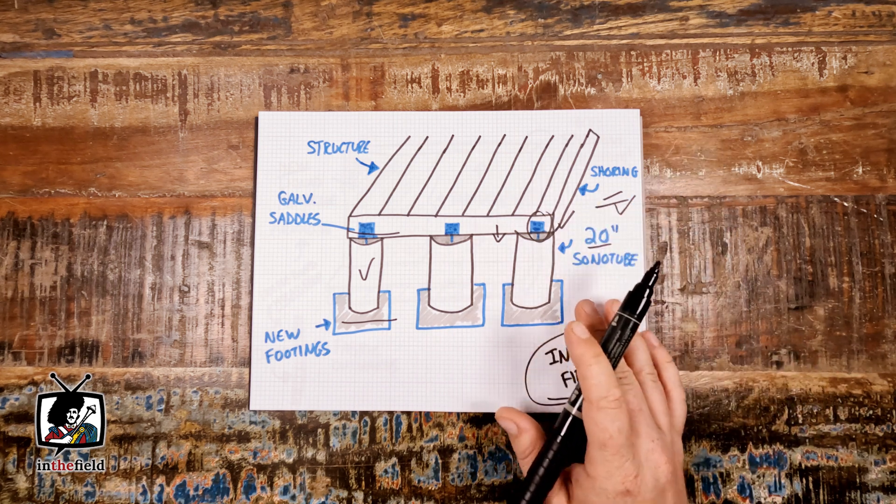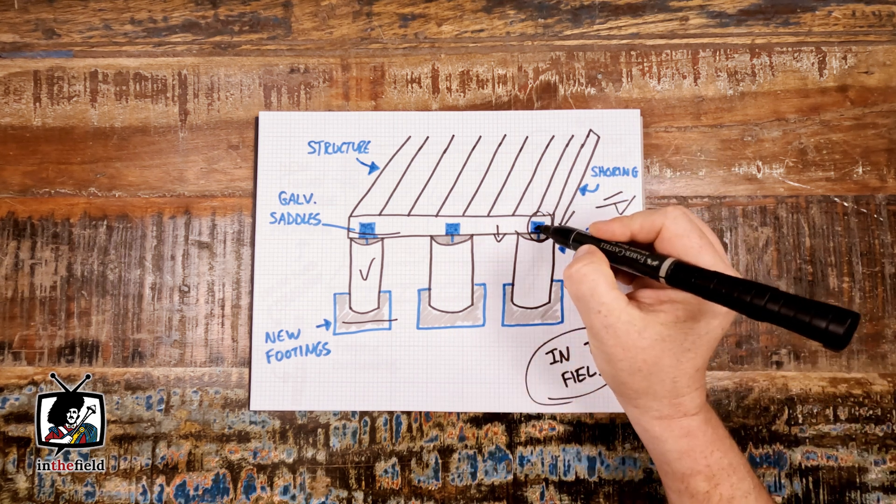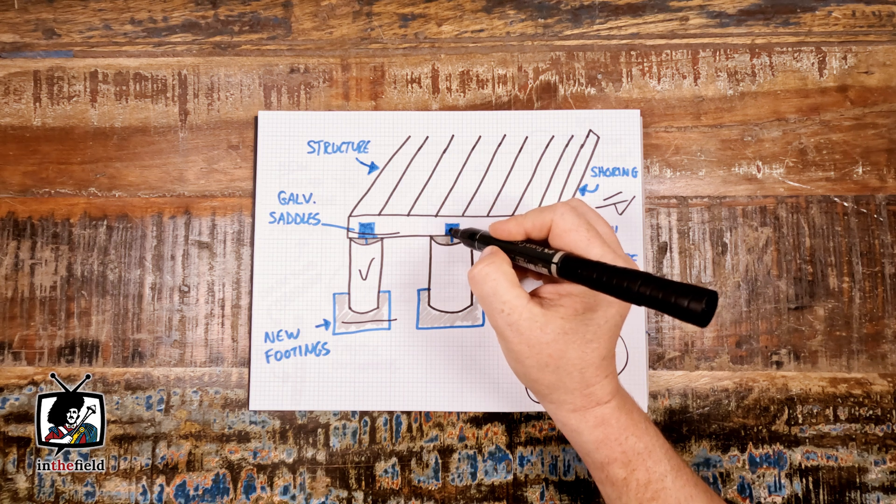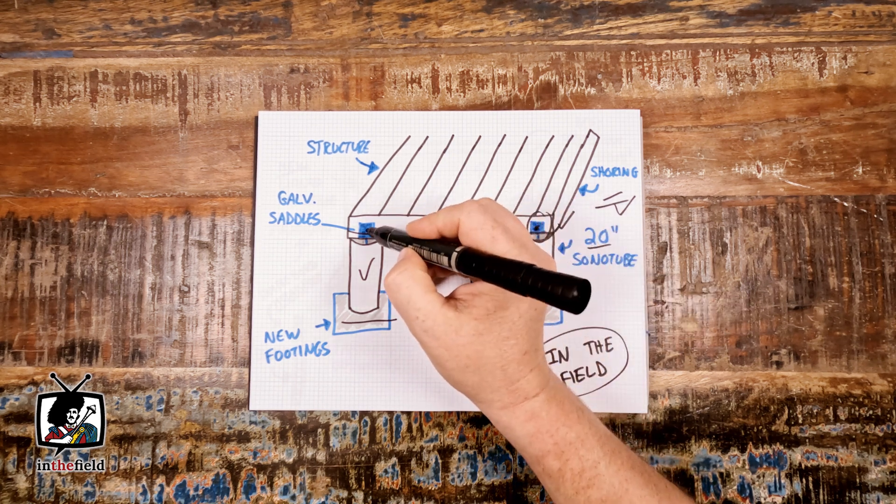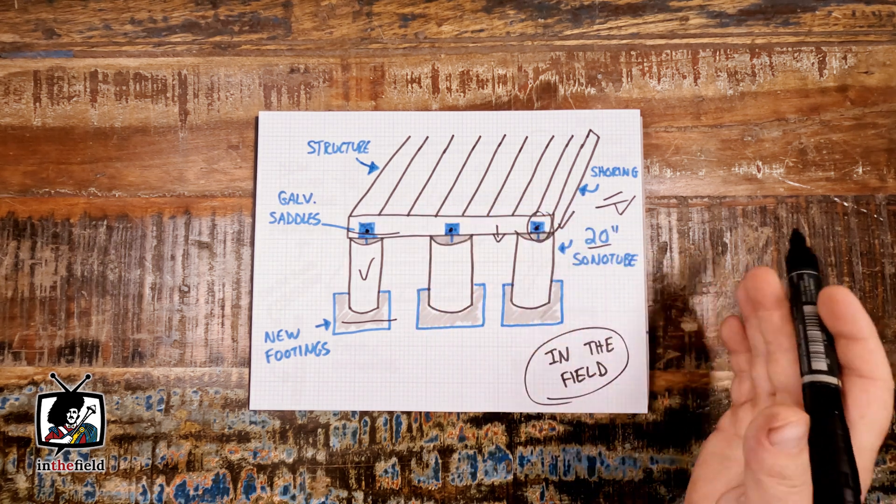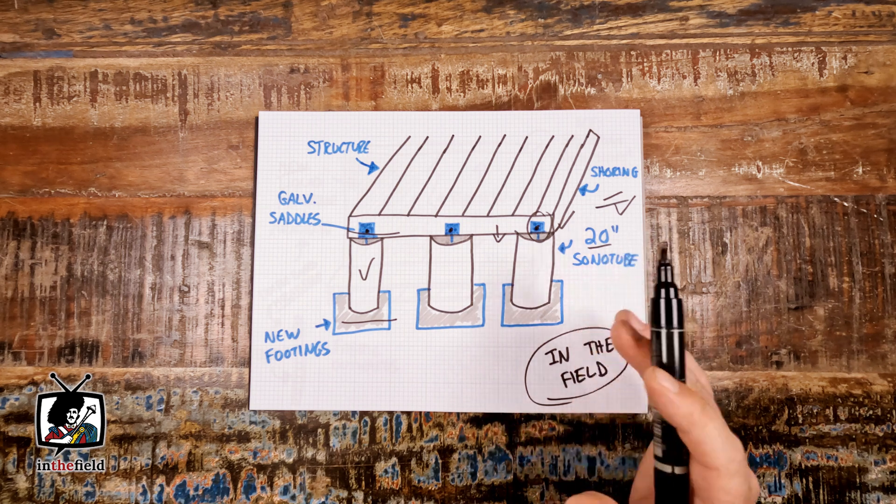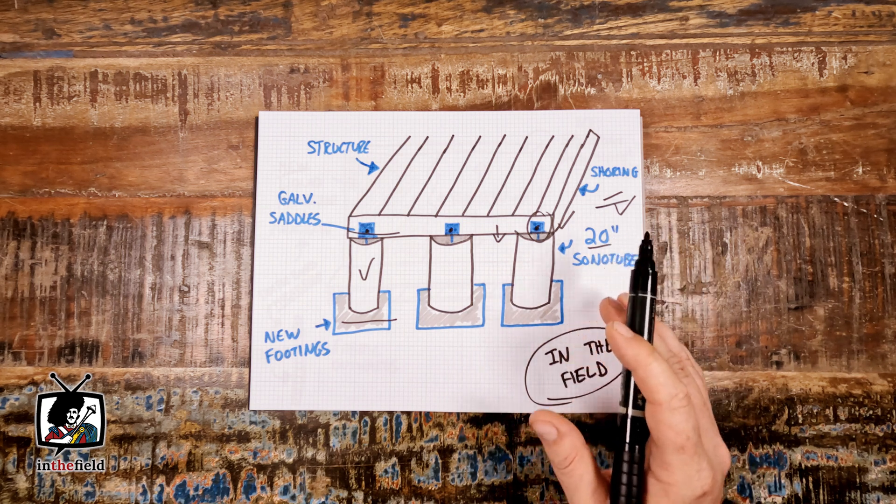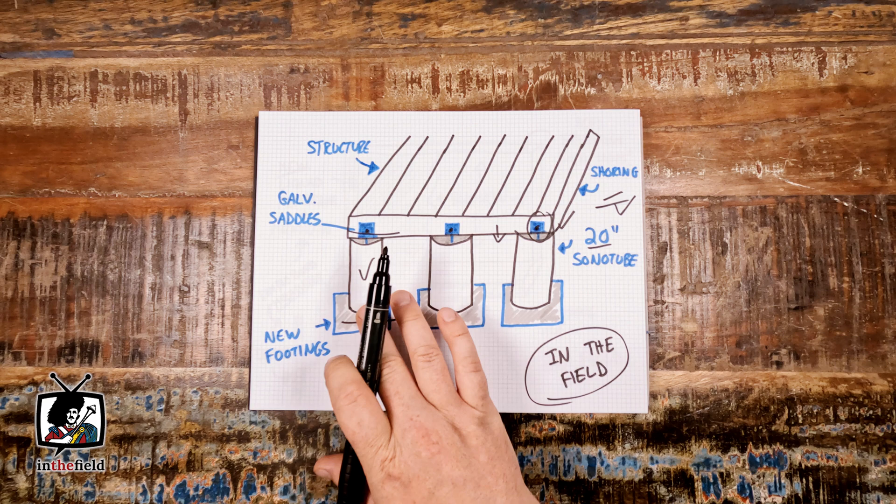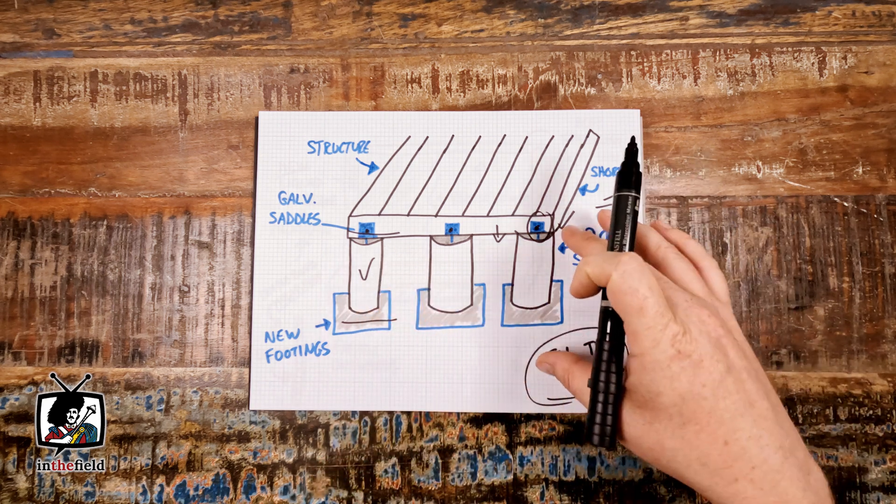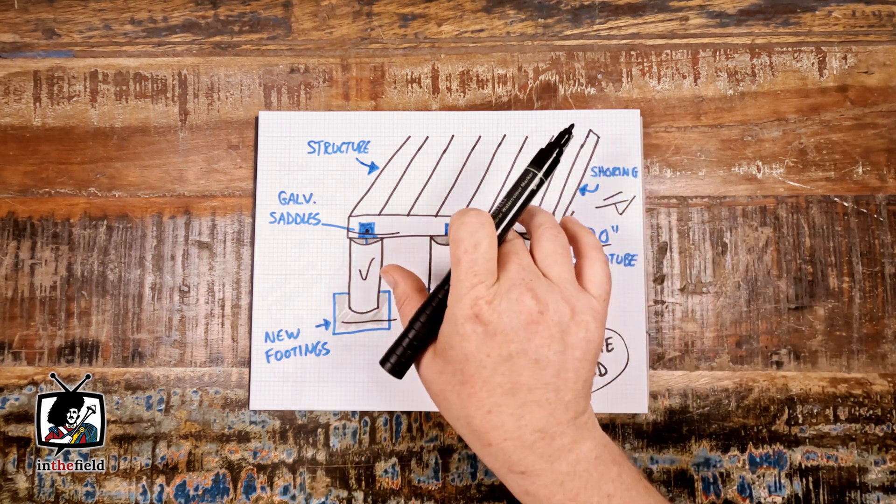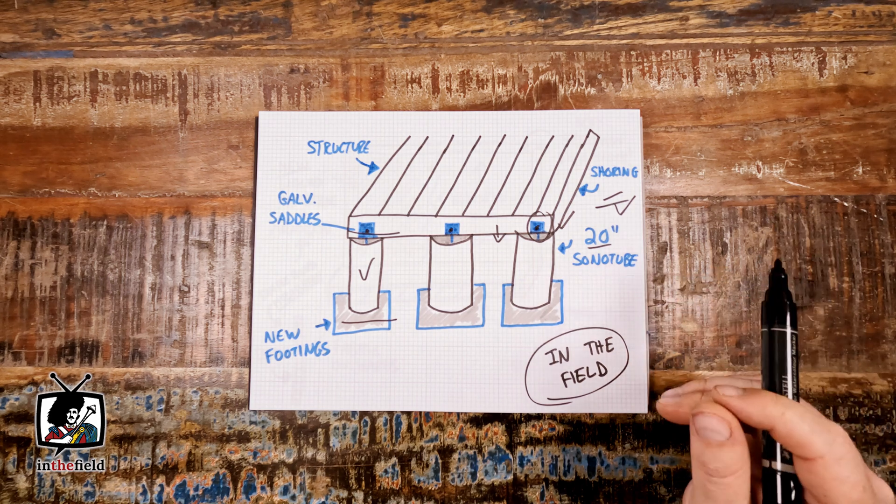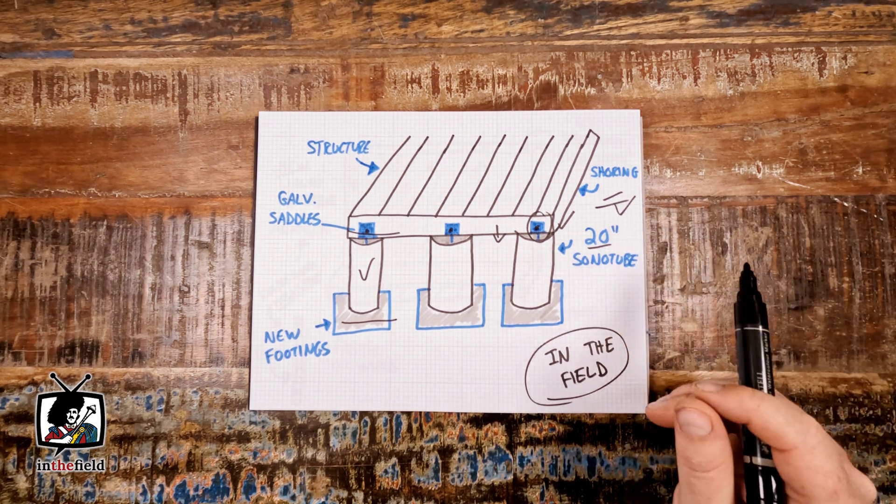Then the last phase was installing proper hardware anchors through the galvanized saddles into the new timber supports. Once that was done things were complete and three new 20 inch sonotube supports with footings were now directly connected to the underside of the structure while the structure was hanging.